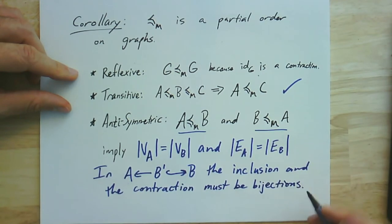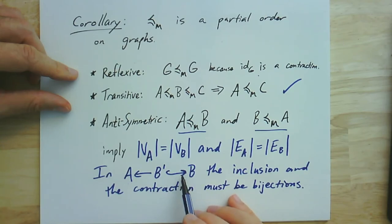And the reason for that is if I look at it in terms of the number of vertices, if I take a subgraph, number of vertices can only go down. And I take contraction again, it can only go down again, but it must not have gone down. So it must have had the same number of vertices in both cases. And in fact, then this B prime had to be just all of B, and therefore we had a contraction in both directions, but the contraction that doesn't remove any vertices or edges is just an isomorphism.